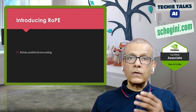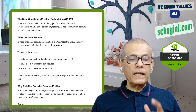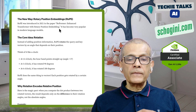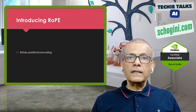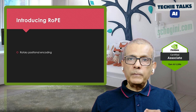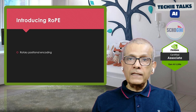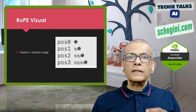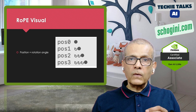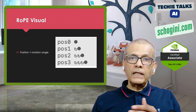And then comes ROPE — Rotary Position Encoding. ROPE was introduced in 2021 in the paper 'RoFormer: Enhanced Transformer with Rotary Position Embedding.' It has become very popular in modern language models. Instead of adding waves, ROPE rotates each embedding pair by an angle proportional to position and frequency — like spinning the vector slightly for every new word. The rotation angle grows linearly with position for each frequency, like turning a dial a bit more with each new word.